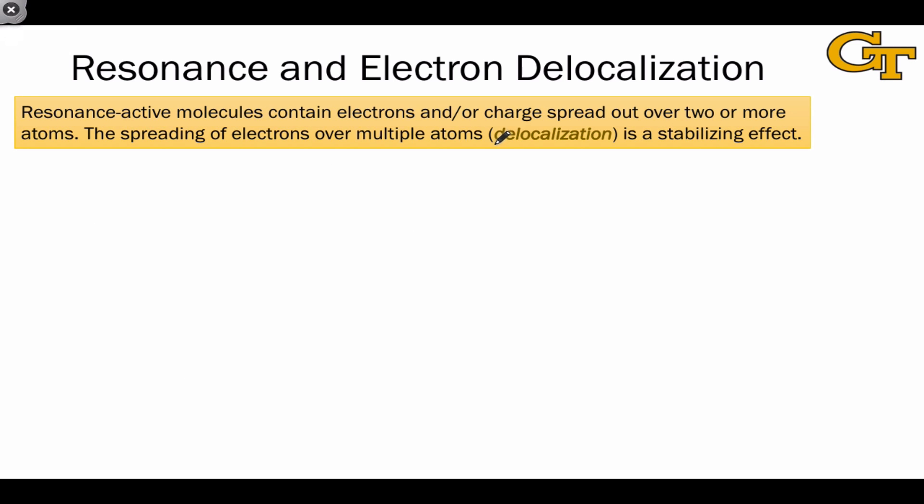The essence of resonance really is electron delocalization. Recall that the major limitation of the Lewis model of bonding is that it can't depict delocalization of electrons over more than two atoms. We're restricted to drawing structures in which electrons are either between a pair of atoms or located on a single atom. But there are many molecules in organic chemistry that are characterized by true delocalization of electrons. And this is where resonance comes into play. The use of multiple Lewis structures to represent contributions to the true structure of an organic molecule.